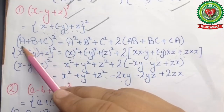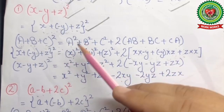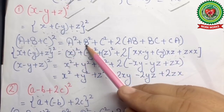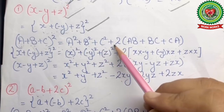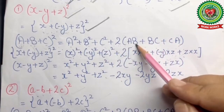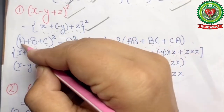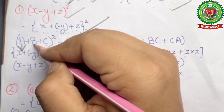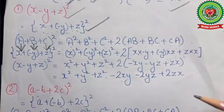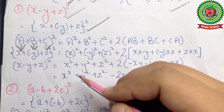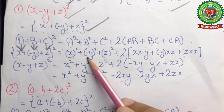This equals a² + b² + c² + 2(ab + bc + ca). Here a represents x, b represents -y, and c represents z. On substituting, we get x² + (-y)² + z² + 2[x(-y) + (-y)(z) + z(x)].